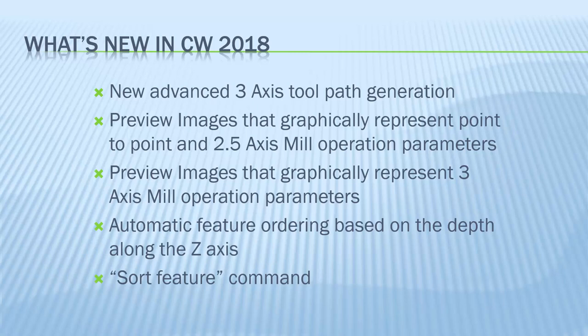Another great change is automatic feature ordering based on depth. If you have many nested features like a pocket in a pocket or slot in a slot, the feature at the top or higher Z level will come first and be machined first, and then a feature at a lower level will come next. You can still move features around by dragging them, and there is now a menu that allows you to order features based on your preference. The sort feature command will allow you to sort features the way you want, and they will be machined in that order.